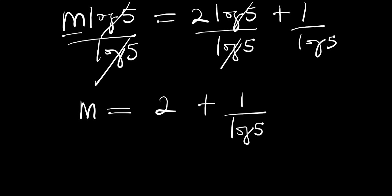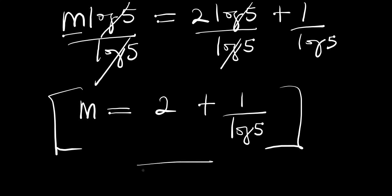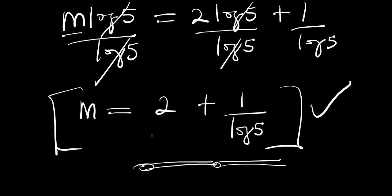If you use your calculator and find the value of log of 5 and insert it here, you will have the decimal equivalent of m. But in this particular video we stop here because we don't want to use a calculator. So this is the final answer: m equals 2 plus 1 over log 5. That's it for the video — thank you and goodbye.